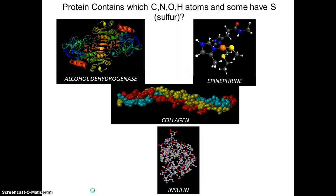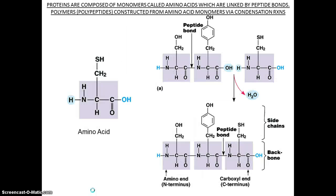Proteins contain carbon, nitrogen, oxygen, and hydrogen atoms, and some have sulfur. The basic unit of proteins is called amino acid. Amino acid is the monomer of proteins — the subunit.